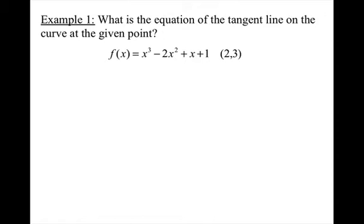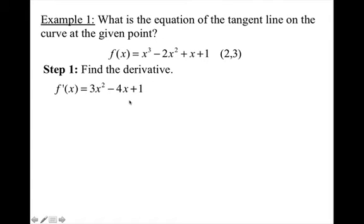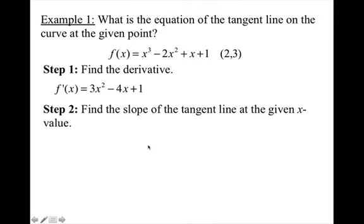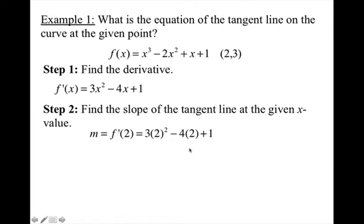For our first example, what is the equation of the tangent line on the curve at the given point? First, I need to find the derivative of F(x). Using the power rule, I get 3x² minus 4x plus 1 as the derivative. To find the slope of the tangent line at the given x value, plug the x value of your point into your derivative. So F prime of 2 gives me 3 times 2 squared minus 4 times 2 plus 1. After simplifying, I get a slope of 5.